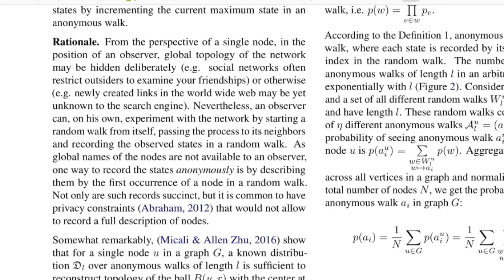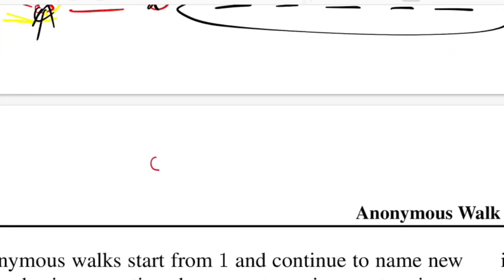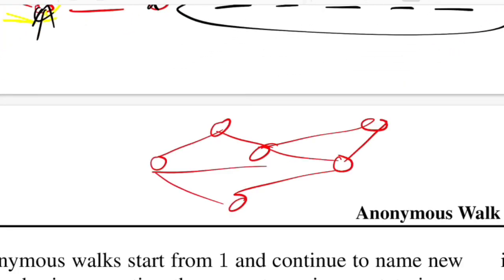The authors explain the rationale behind choosing anonymous walks. The analogy is: consider a social media network that is pretty private — you cannot know the entire topology, node labels, or connections. In such a scenario, the best thing you can do as an observer at a node is to perform random walks from that node multiple times, to get a sense of nearby nodes. But since the network is private and you have no label identities, you do the walk anonymously — observing states as their indexes and referring back to the first occurrence when you revisit a node.